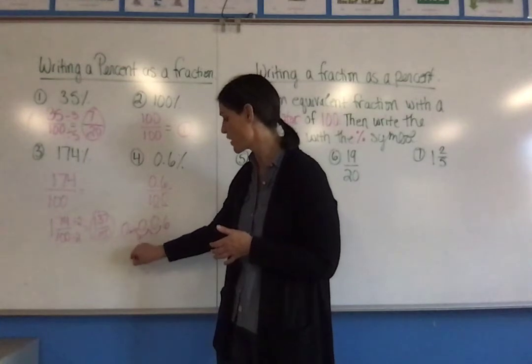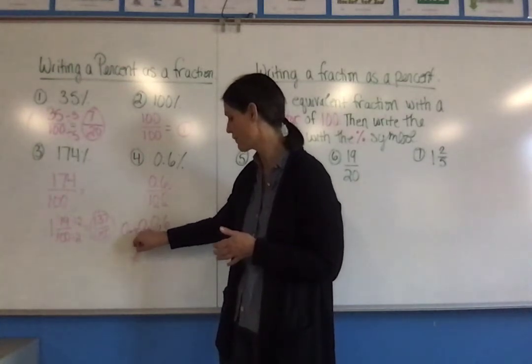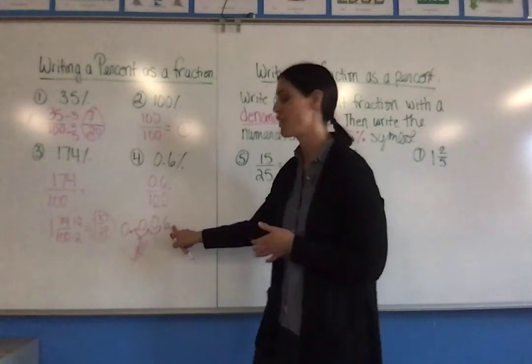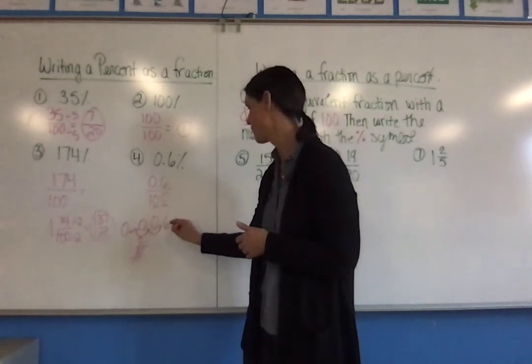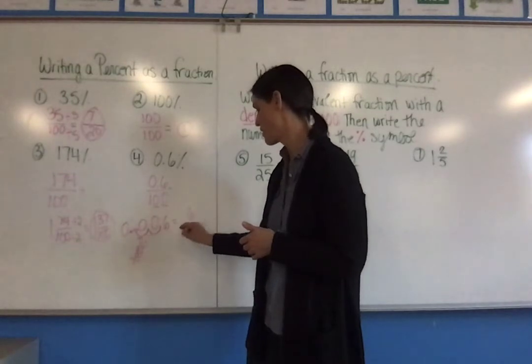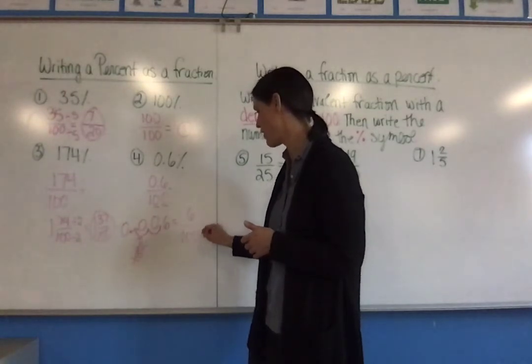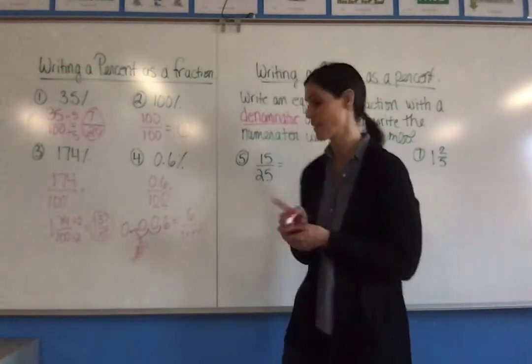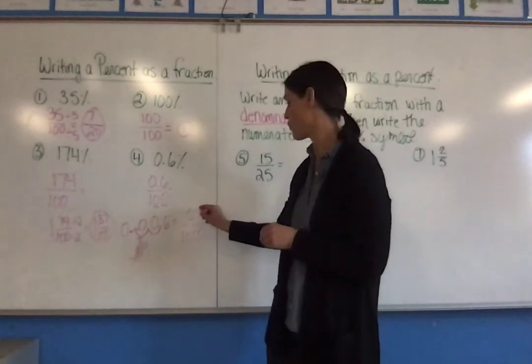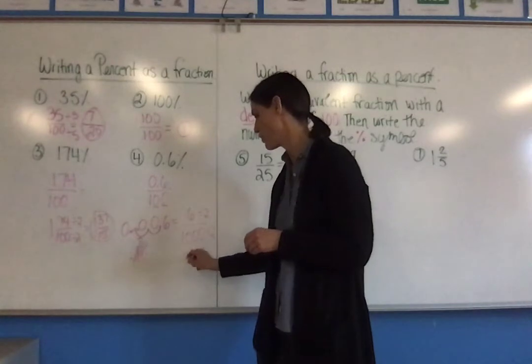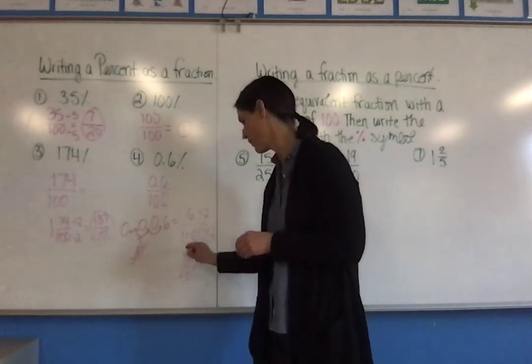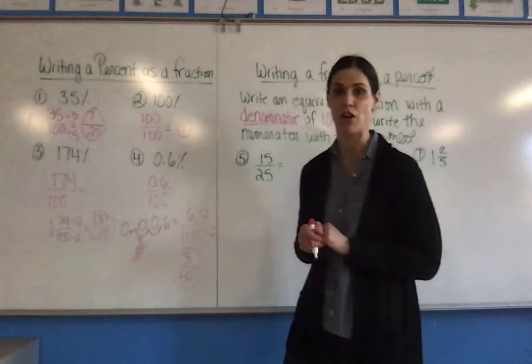So I have to read this. My first place value is my tenths, then I have my hundredths, then I have my thousandths. So I read this as six thousandths. So in fraction form, that is 6/1000. It's not in simplest form, and I have to divide the numerator and the denominator by 2, so I get a fraction of 3/500.